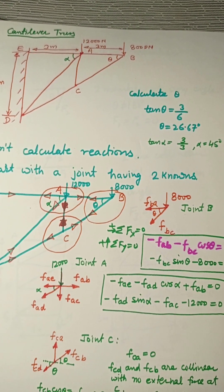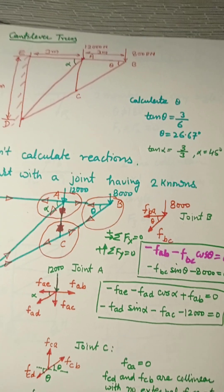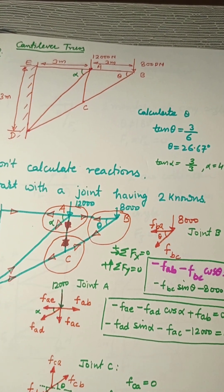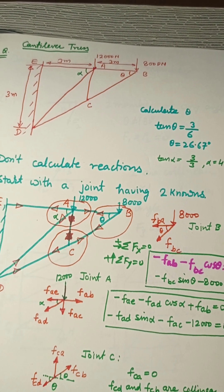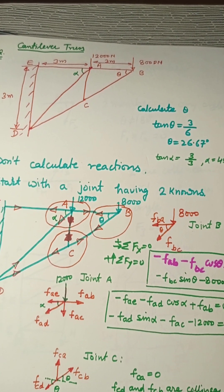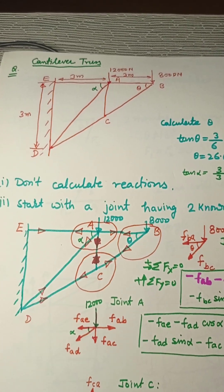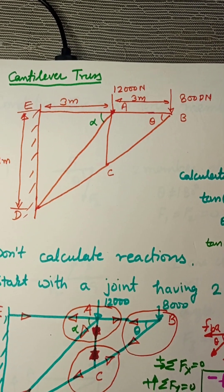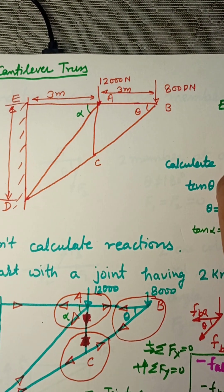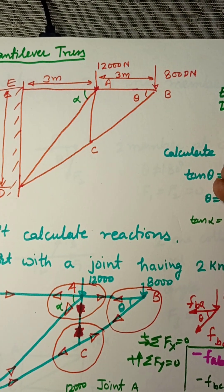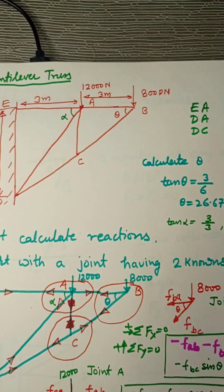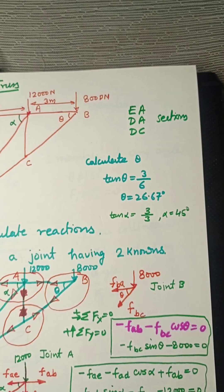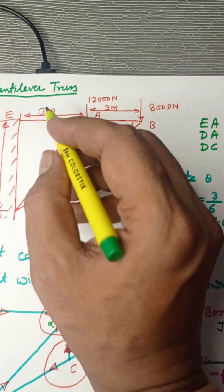This is a simple way to use method of joints for a cantilever truss. Method of joints is needed when they ask you to solve for all members. If they ask you to solve with method of sections — for example, calculate forces in EA, DA, and DC — we use method of sections. We cut the truss into two sections.